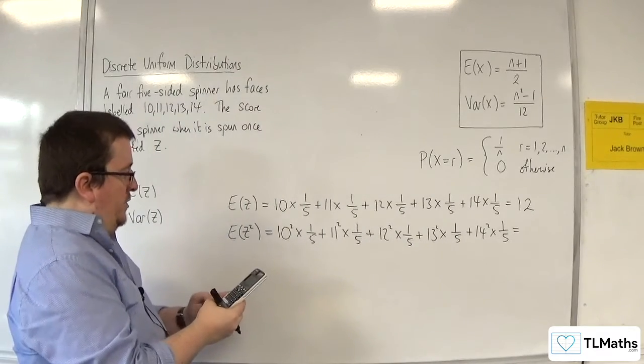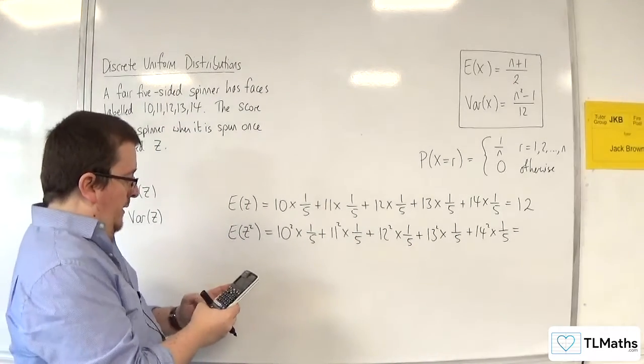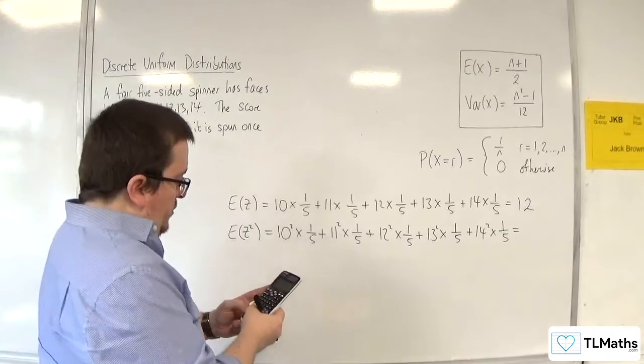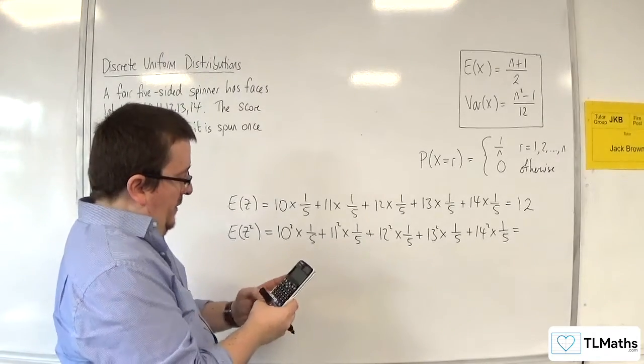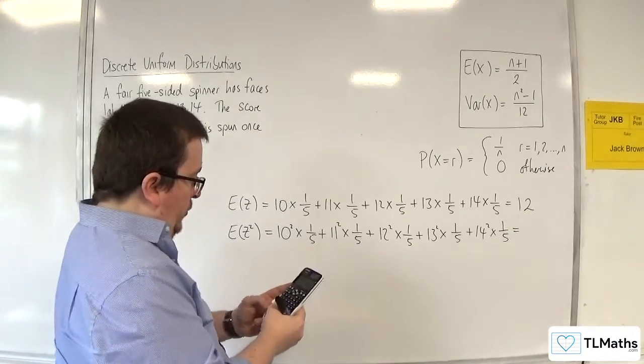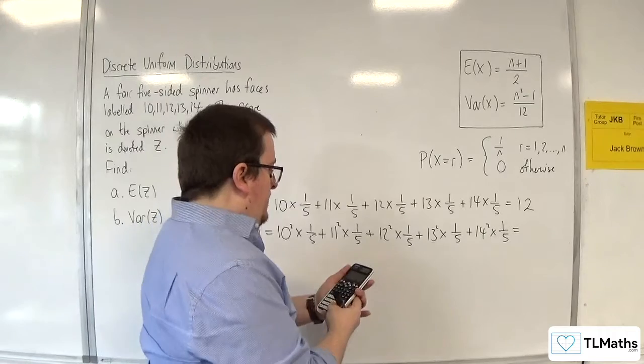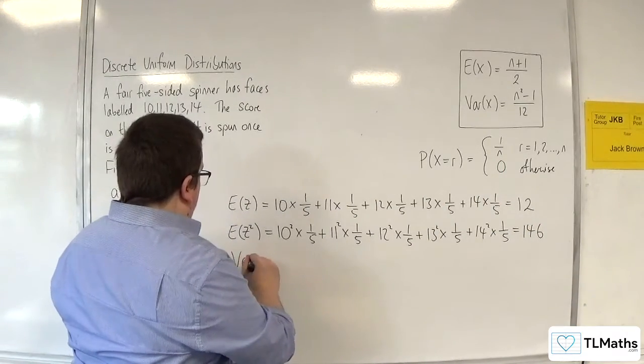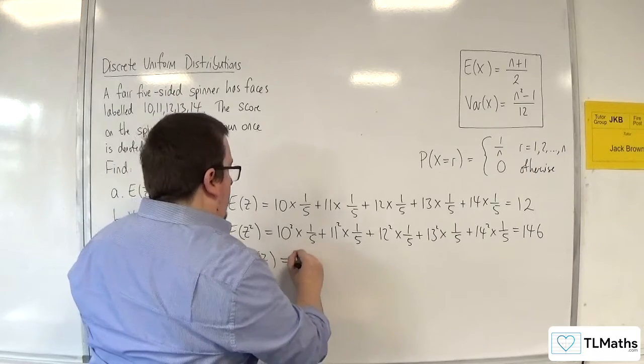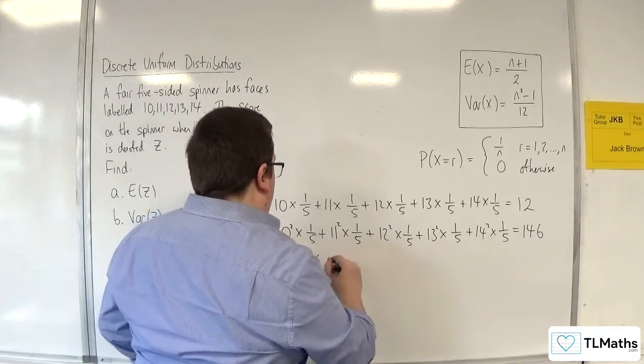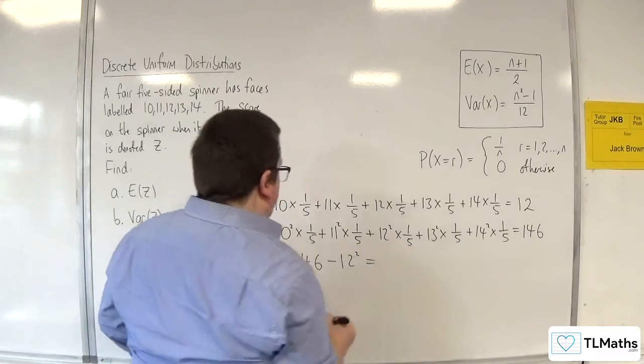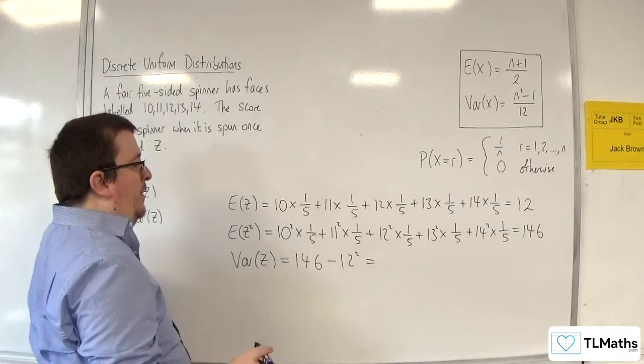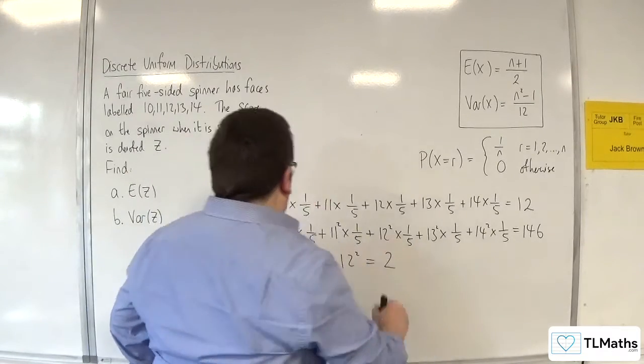So 10 squared over 5 plus 11 squared times 1 over 5 plus 12 squared times 1 over 5 plus 13 squared times 1 over 5 plus 14 squared times 1 over 5. So var of z is equal to 146 take away 12 squared, which is 146 minus 144, and so it's going to be equal to 2.